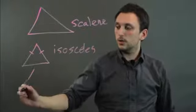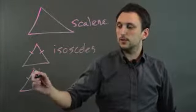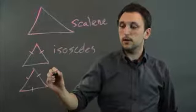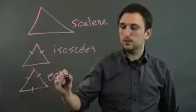Or equilateral, which looks a lot like an isosceles, but equilateral is three sides being equal and three angles.